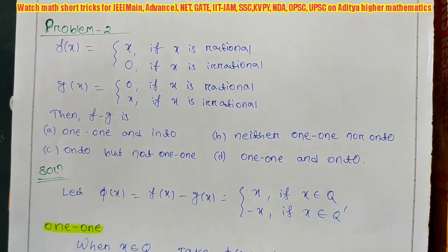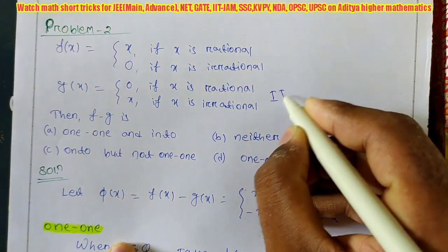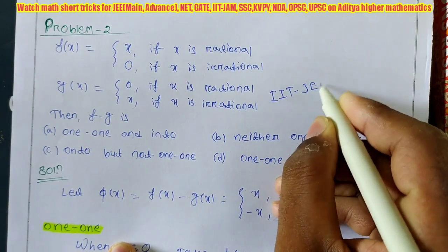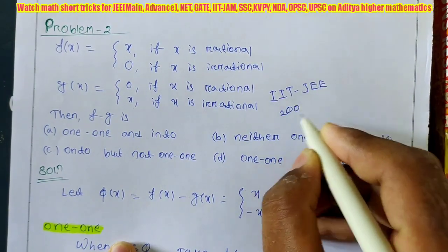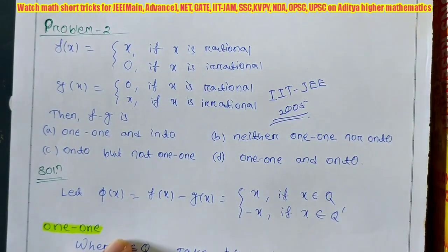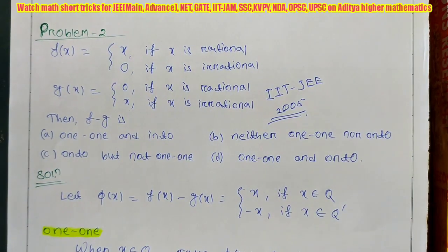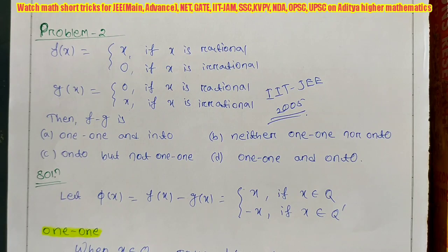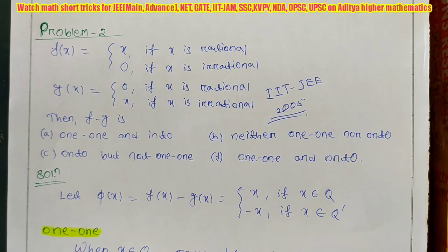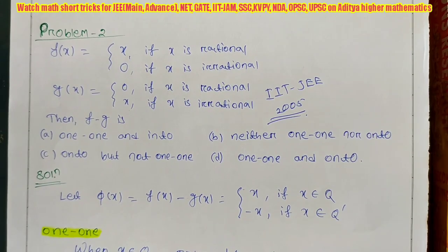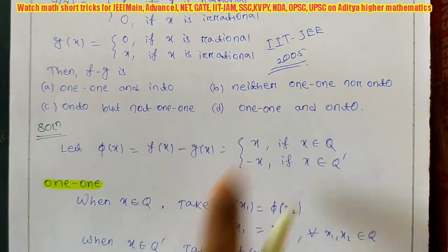The second problem is a single-option question that came in IIT JEE 2005. Here f(x) is defined as: f(x) = x when x is rational, and f(x) = 0 when x is irrational. Similarly, g(x) = 0 when x is rational, and g(x) = x when x is irrational. Then what can we say about f - g? We have to check from the four given options.